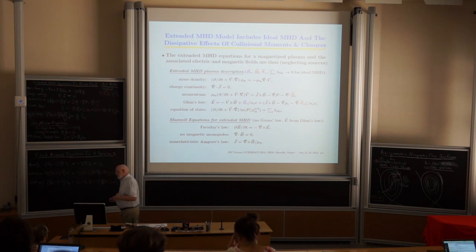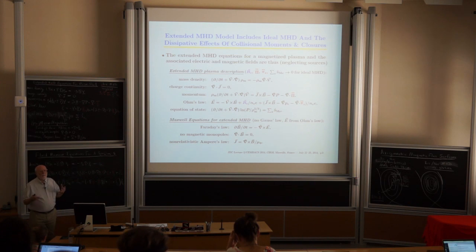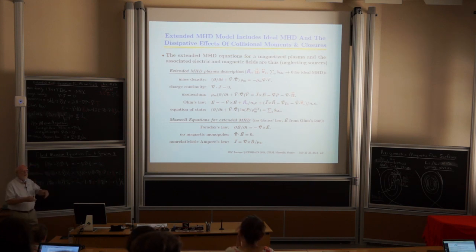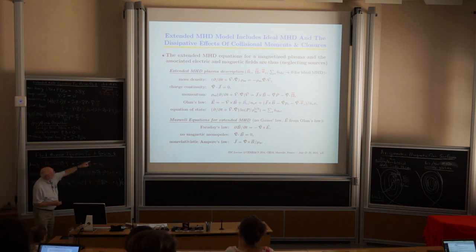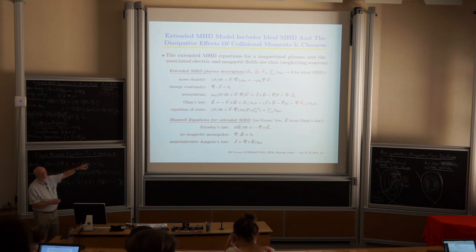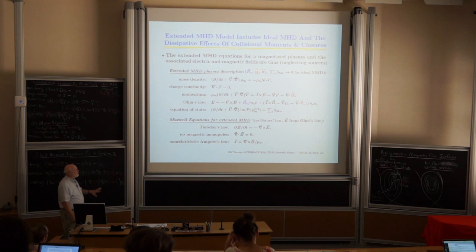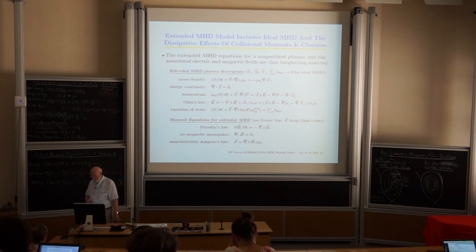So we have an ideal MHD description. Ideal means no entropy production — none of these collisional or viscous effects. So all the red terms are dropped, and the entropy production is zero. We just have d/dt of p over rho^gamma, which is effectively pV^gamma.